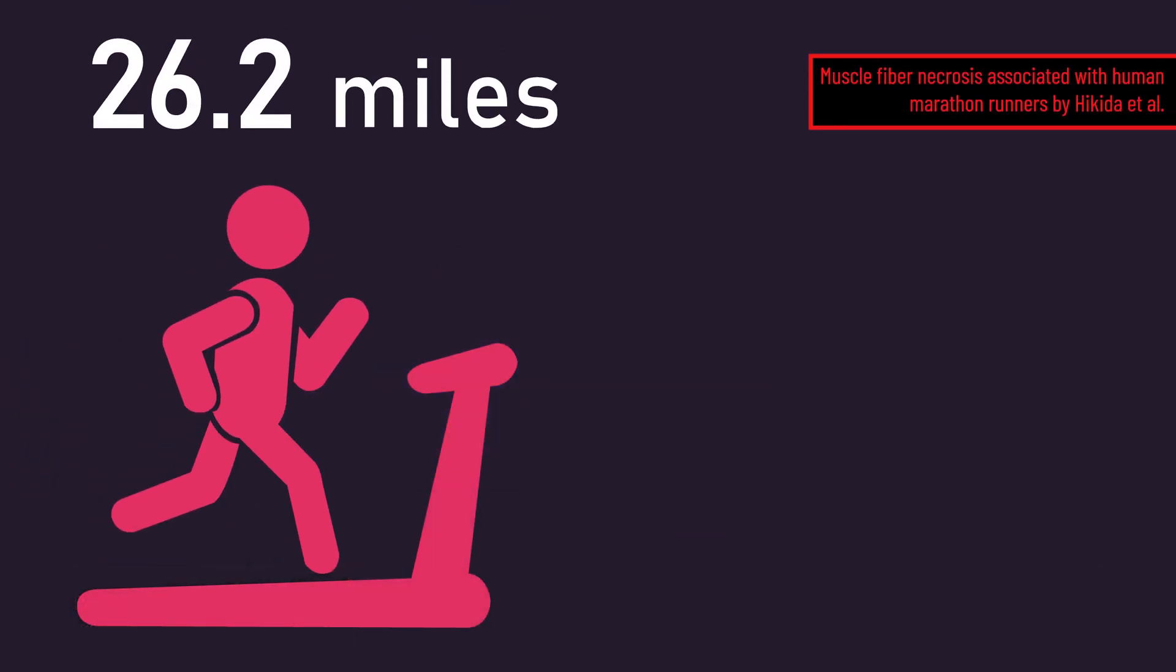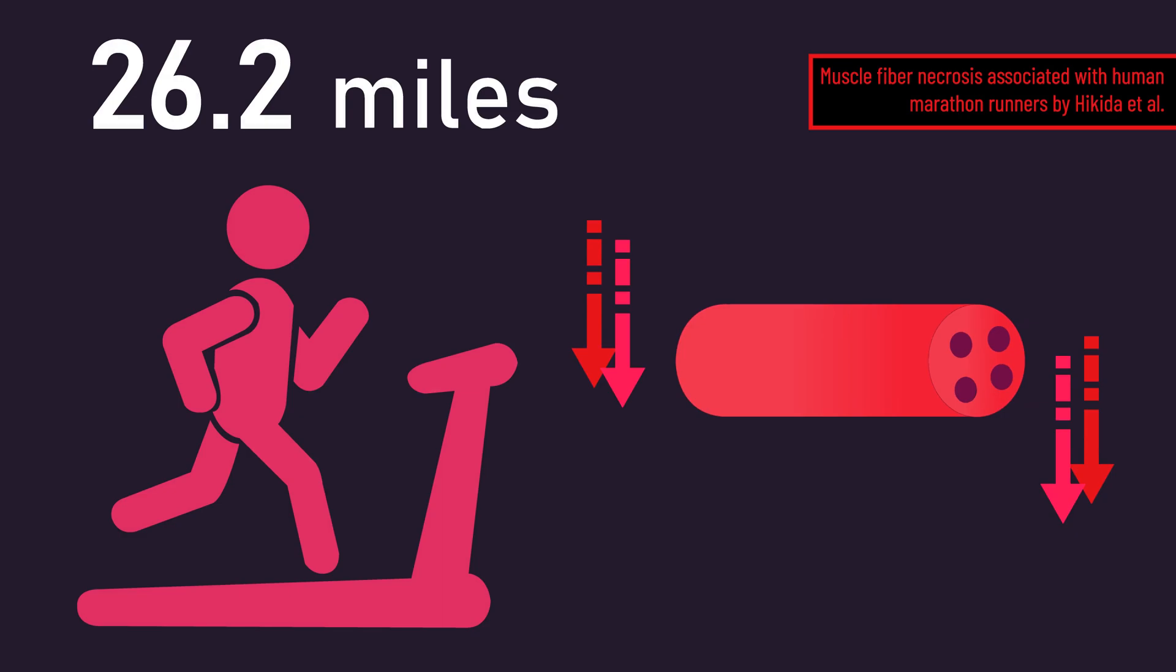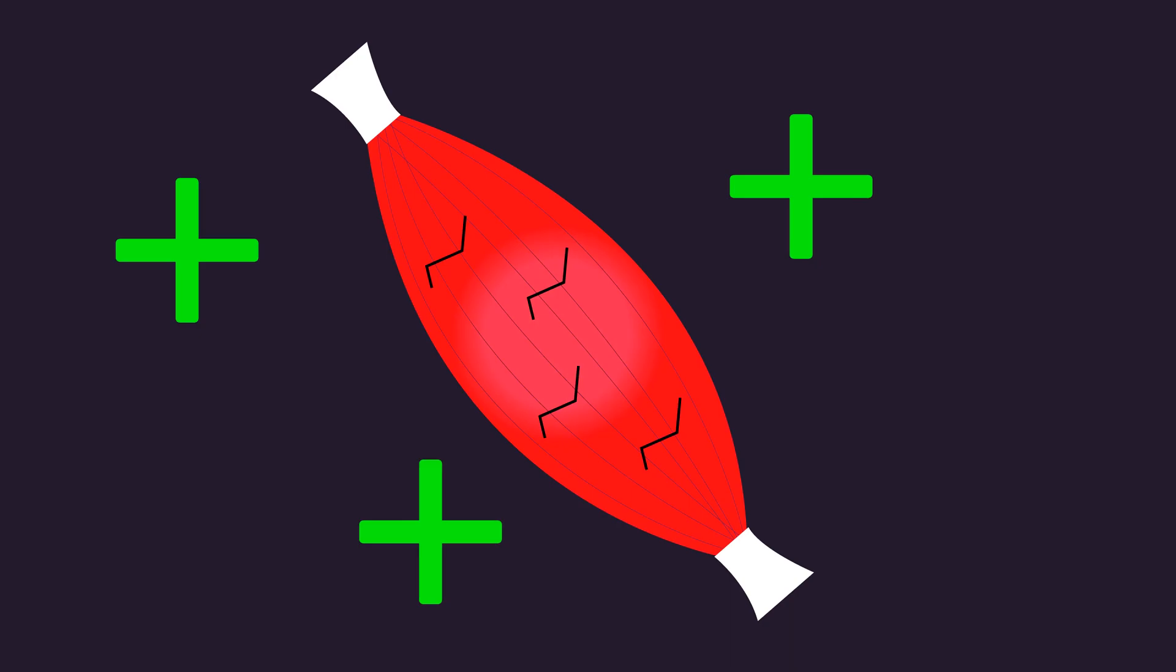Marathon running has also been documented to cause significant muscle damage, yet some data finds marathon running decreases muscle fiber sizes. Furthermore, if muscle damage had additive effects on hypertrophy, we would expect using training variables that enhance damage to produce more growth, but this isn't the case.